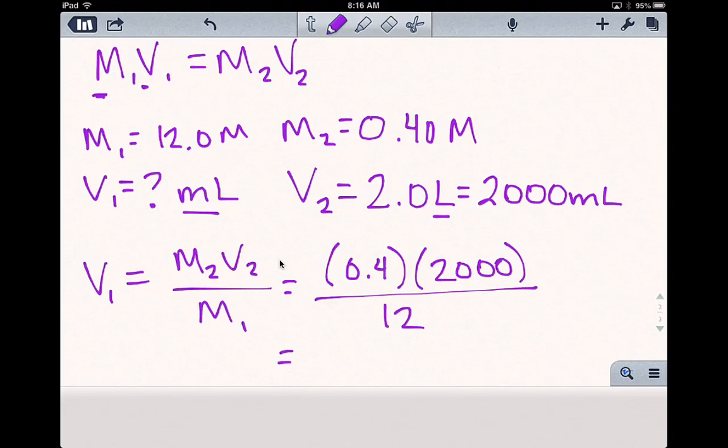66 point repeating sixes. If we round to the appropriate number of significant figures, which is determined by this value here, we get 67 milliliters.